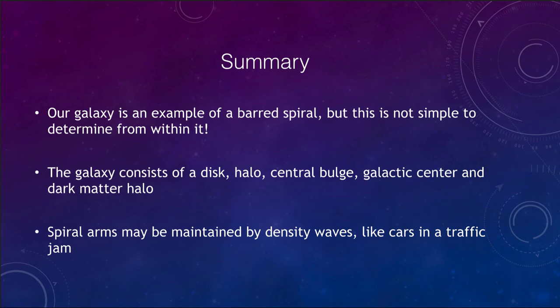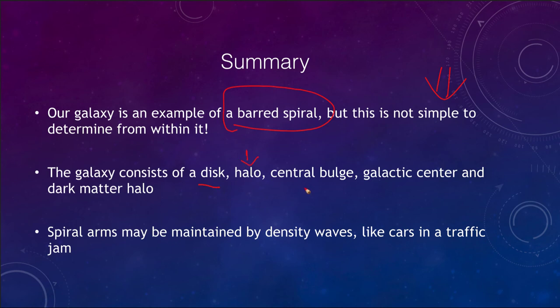In summary, our galaxy is an example of what we call a barred spiral galaxy, meaning it has a bar going through its center, though this is not simple to determine because we are stuck inside it. The composition of our galaxy contains the disk, halo, central bulge, the galactic center, and a dark matter halo outside that. We believe that spiral arms can be maintained by density waves, which bunch up material much like cars in a traffic jam. That concludes this lecture on the structure of our galaxy — we'll be back next time for another topic in astronomy. Have a great day everyone.